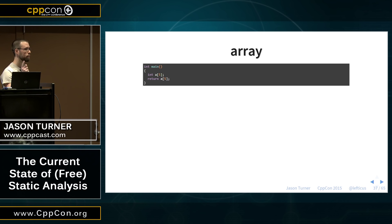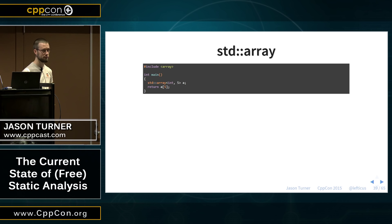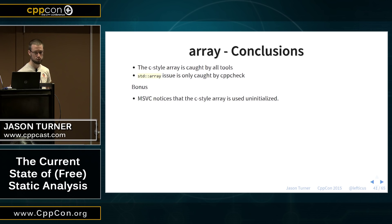What do we have here? Right — reading beyond the end of the range, we all got that. And what about here? It's exactly the same thing, but now we're doing it the smart C++11 way. C-style arrays were caught by all the tools. std::array — I was kind of impressed — CppCheck caught it. And Visual Studio notices the C-style array is being used uninitialized, which is handy.